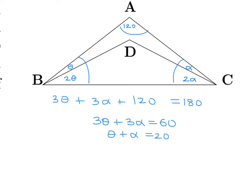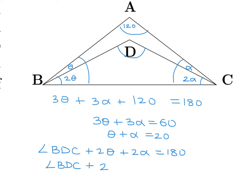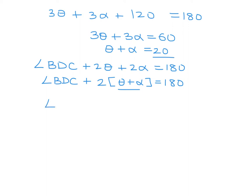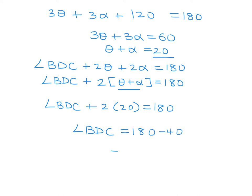Now we have to figure out angle BDC. Using this triangle, angle BDC plus 2 theta plus 2 alpha equals 180. So BDC plus 2 times (alpha plus theta) equals 180. We know alpha plus theta is 20, so substituting in, BDC plus 2 times 20 equals 180. Angle BDC is 180 minus 40, which is 140 degrees.